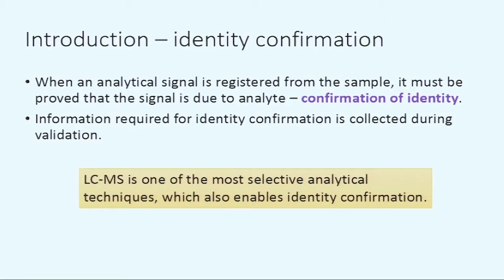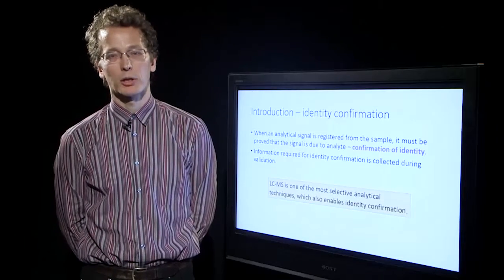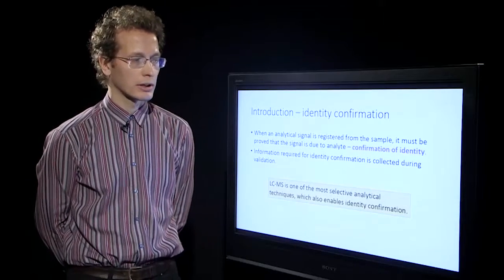If the method is already in use and we detect a signal as a response to something in the sample, then we must be able to confirm that this something in the sample is really our analyte that we want to determine. Therefore, we have to collect the information required for analyte confirmation already during the validation of the method. LC-MS is a good method in terms of selectivity and also for identity confirmation.